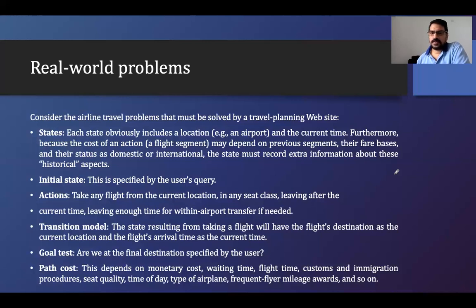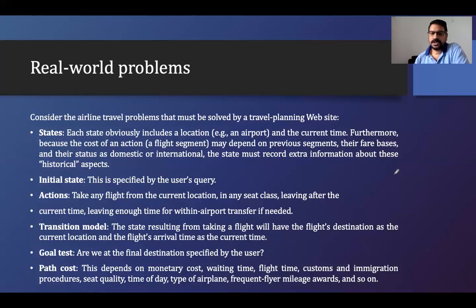The transition model: the state resulting from taking a flight has the flight destination as the current location and the flight arrival time as the current time. The goal state checks: are we at the final destination specified by the user? The path cost depends on monetary cost, waiting time, flight time, customs and immigration procedures, seat quality, time of day, type of airplane, and frequent flyer miles.